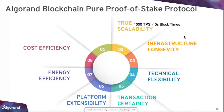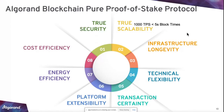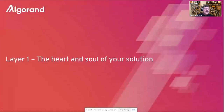Cost efficiency is also key — a transaction on Algorand is less than a twentieth of a penny. And then you have true security, inherent to the blockchain infrastructure, which is a very important point to make as well.